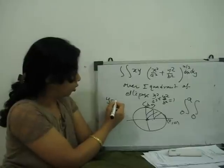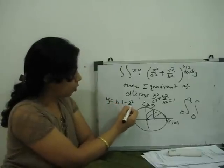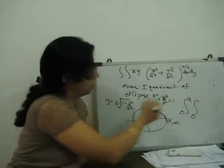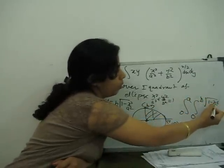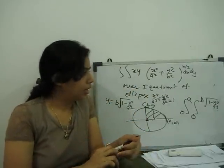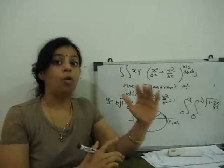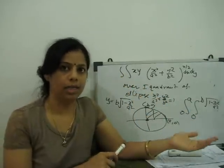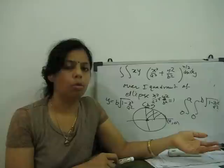So our upper limit for this is b under root of 1 minus x square upon a square. This integral. You can solve this integral, apply the limit, then solve for this. So this is how to find out the limits for a given double integral. You can make practice for more questions also.